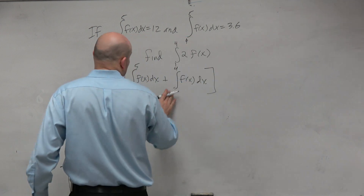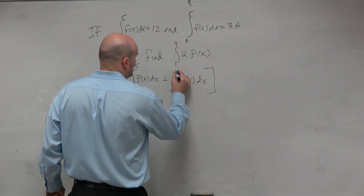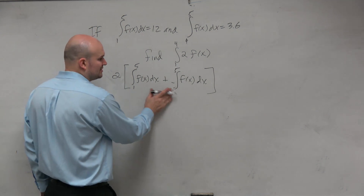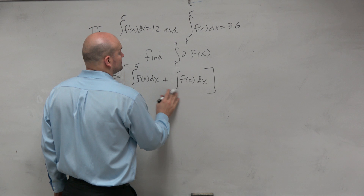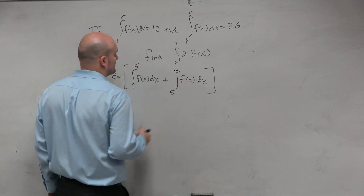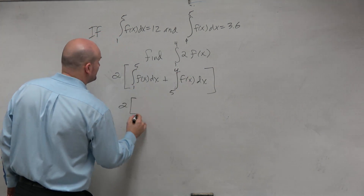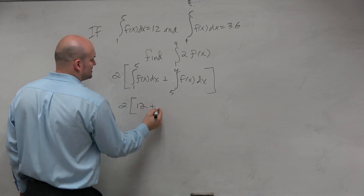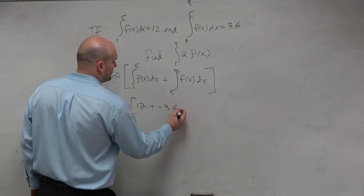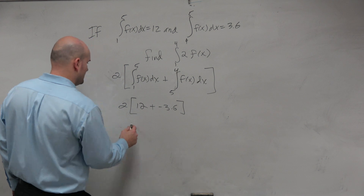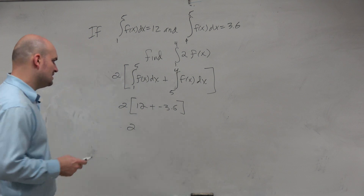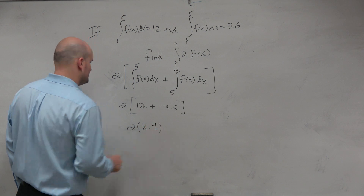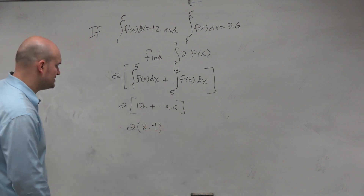Could you have also just done this: integral from 4 to 5 and then make it negative? Yeah, sure — that's really the same thing. So then what I have here is 12 minus 3.6, and then I get 2 times 8.4. And then multiplying by 2 is going to be 16.8.